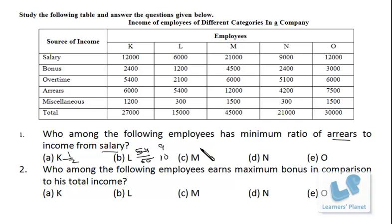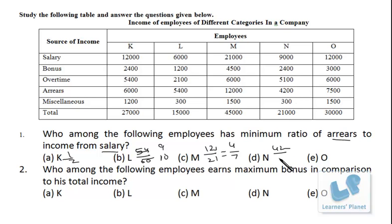For M, it's 12,000 by 21,000, which simplifies to 12 by 21, or 4 by 7. For N, it's 4,200 by 9,000, simplifying to 42 by 90, which is 7 by 15. For O, it is 7,500 by 12,000, simplifying to 75 by 120, which gives 5 by 8.